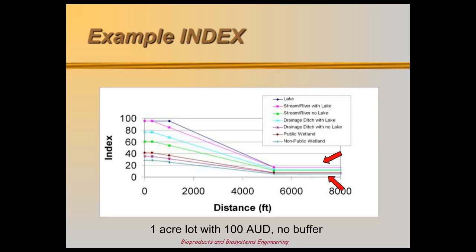These illustrate the impact type of water and distance have on the index value. Smaller feedlots and better buffer areas start with a lower impact. MinFarm's index shows the amount of pollutants leaving the end of treatment, including the unique distance to any specific water of concern.